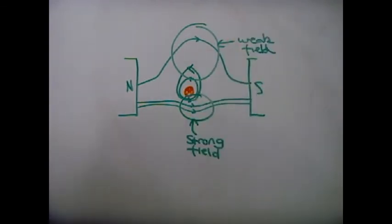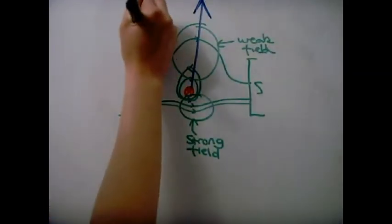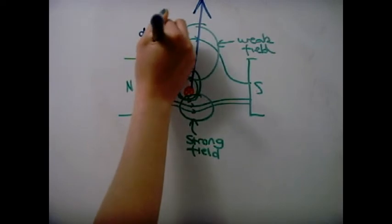Others are in the opposite direction, therefore there is a weaker field. The wire is pushed from the stronger field to the weaker field. There is a force.